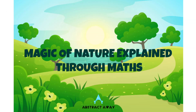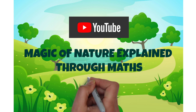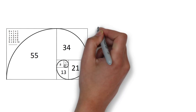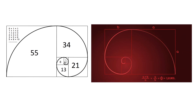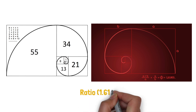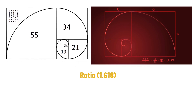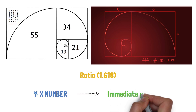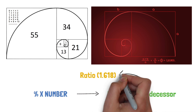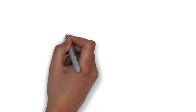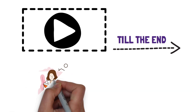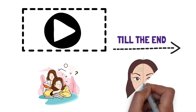The connection between the Fibonacci sequence and the golden ratio is that the ratio 1.618 can be found throughout the Fibonacci sequence. By dividing any number within the sequence by its immediate predecessor, the result will always be approximately 1.618.